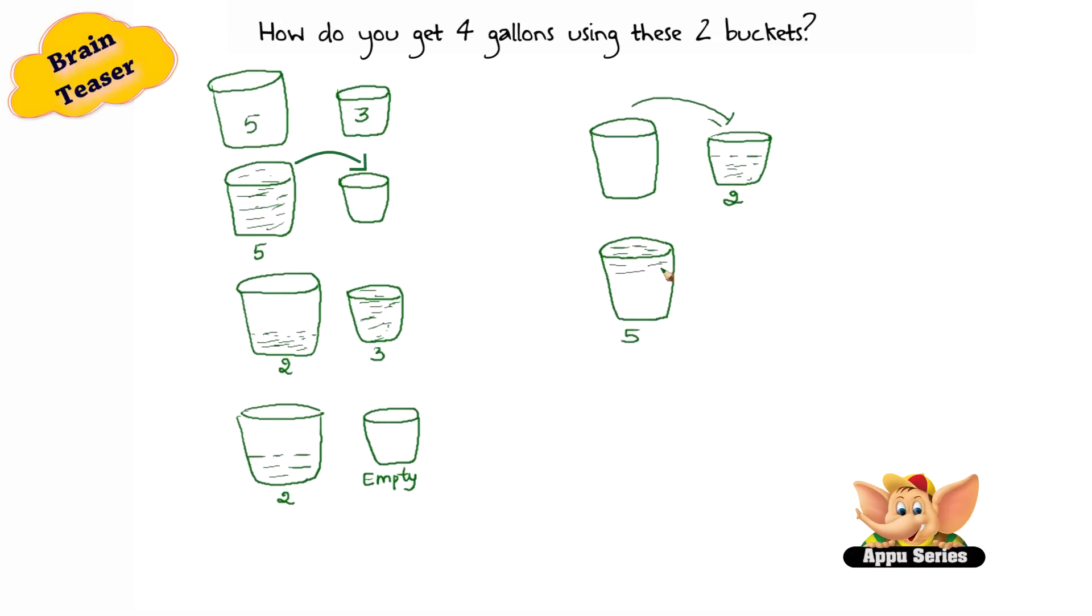Fill up the 5-gallon bucket and pour it into the 3-gallon bucket until it's full. One gallon will fill into the 3-gallon bucket, leaving 4 gallons in the 5-gallon bucket.